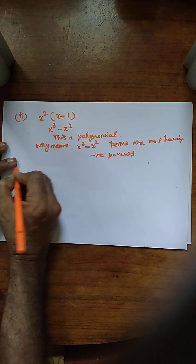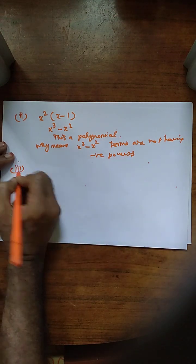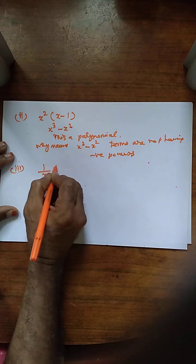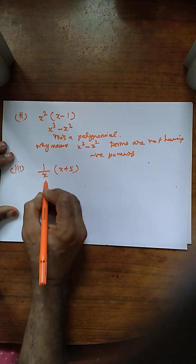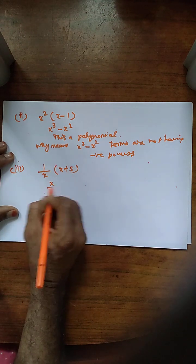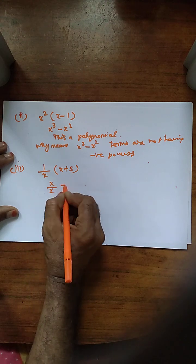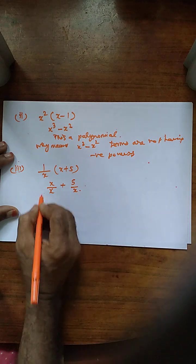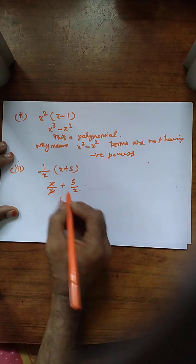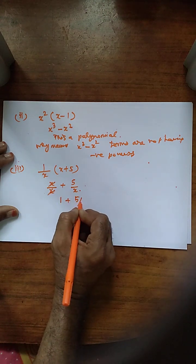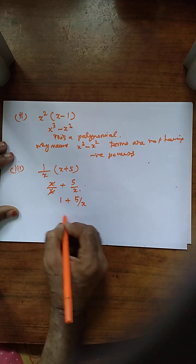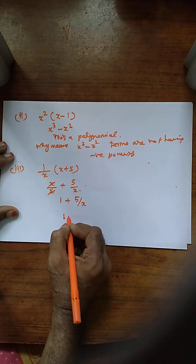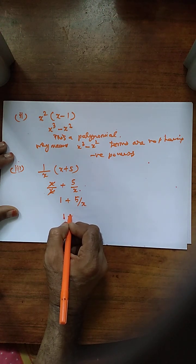Third one is 1 by x into x plus 5. So x into 1 is x by x plus 5 into 1 is 5 by x. x by x is 1 plus 5 by x.